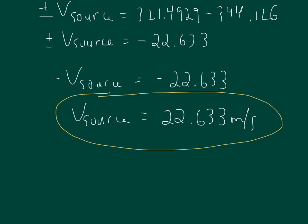So if we write it out properly, the speed of the source, which is the fire truck, would be 22.6 meters per second.